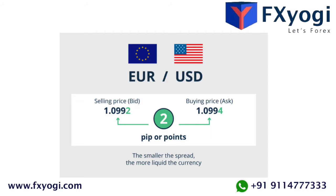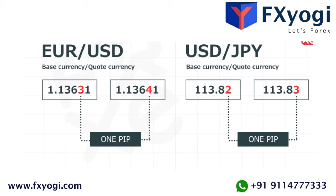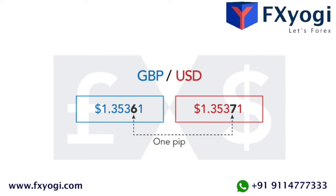Most pairs go out to four decimal places, but there are some exceptional cases — like the Japanese yen pairs, which go out to two decimal places. For example, for a EUR/USD pair it is 0.0001, and for a USD/JPY pair it is 0.01.